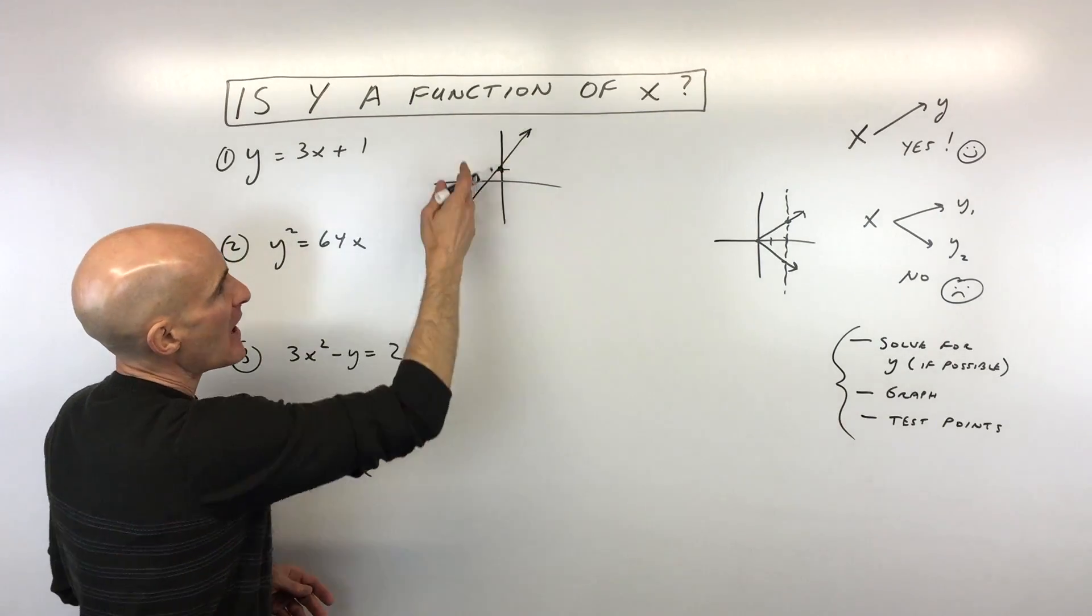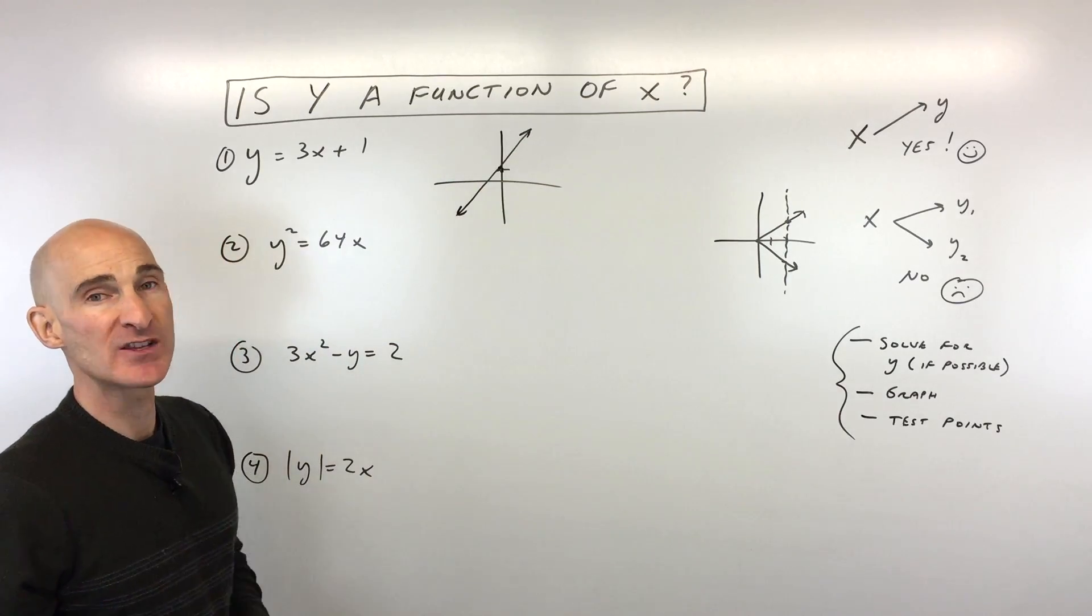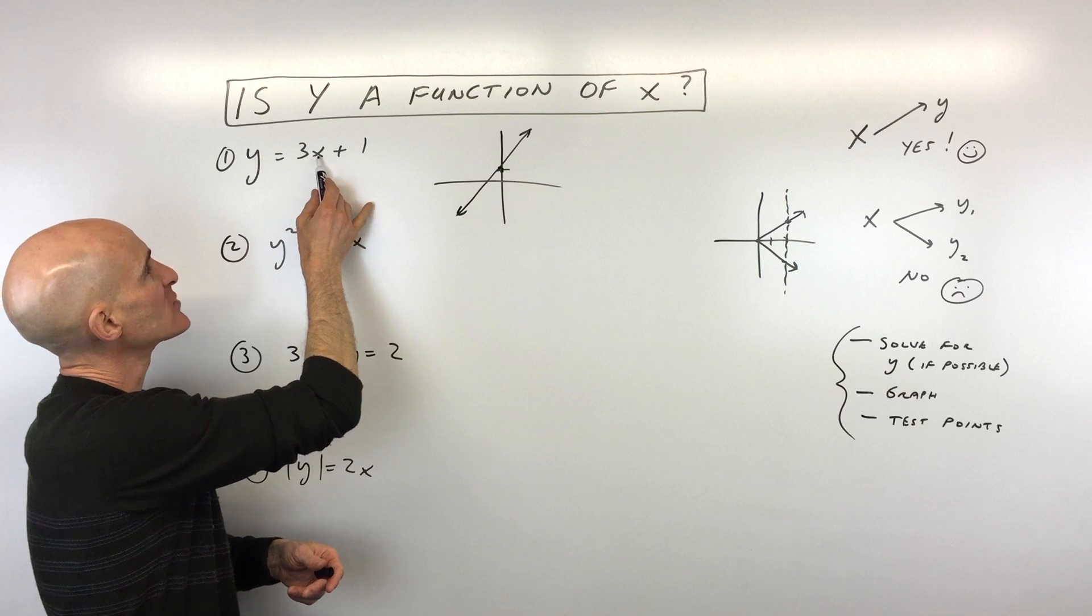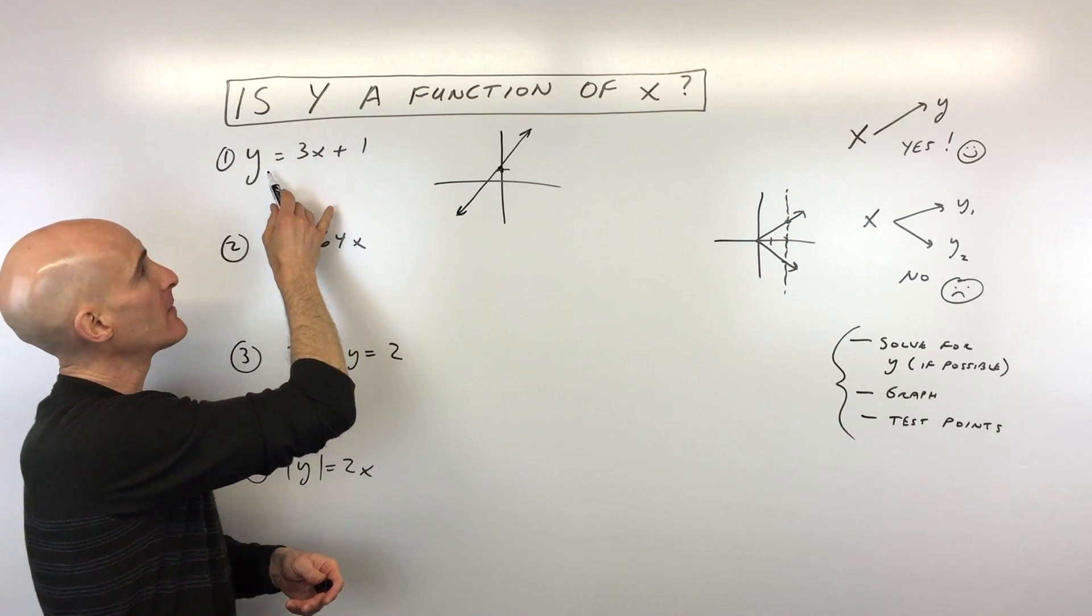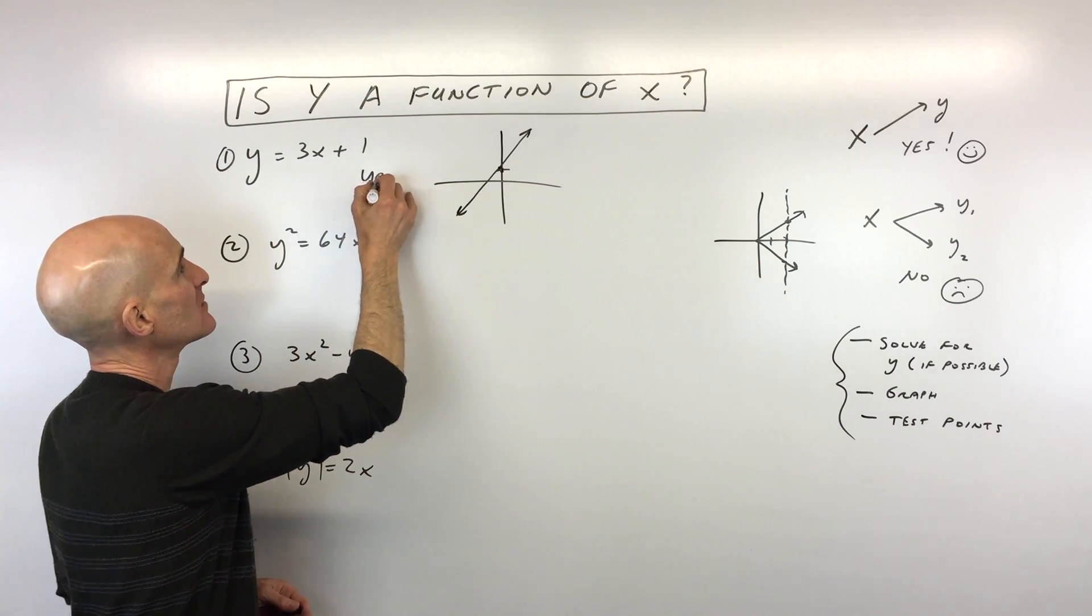So you can see it's passing that vertical line test, meaning for every x value there's only one y value that it corresponds to on the graph. Another option is you can see if I put in values for x, I can see that I'm only going to get one output for y. So we know that this is a function. So we're going to say yes for this one.